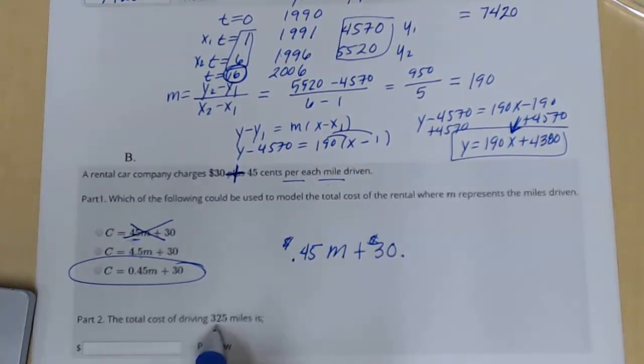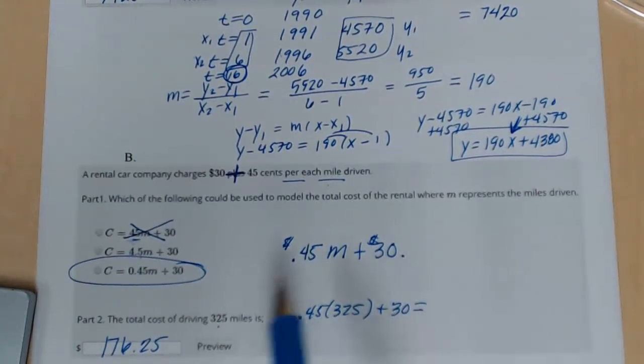The total cost of driving 325 miles. Now we need to evaluate 0.45 times 325 plus 30. Plug all that in your calculator and you get $176.25. So with this one, it was just a matter of making sure we set it up correctly, make sure we have the right units, and then evaluating with it.